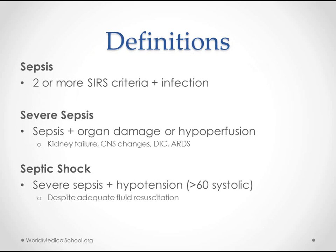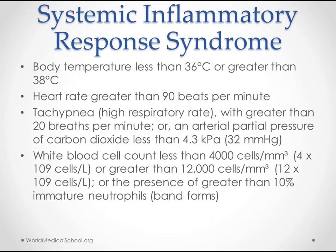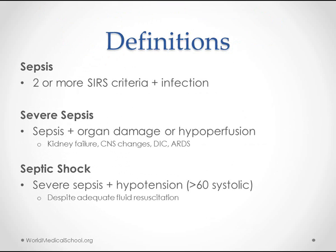The next definition is sepsis. Sepsis is basically SIRS caused by infection. In order to make this diagnosis, you need two or more of the SIRS criteria — body temperature, heart rate, respiratory rate, or white blood cell count — plus some source of infection. This can be as clear as an open wound or a line that's been in for a long time. You can almost assume that's sepsis because you have a foreign body in there, especially if you have a positive culture. That's good enough reason to start antibiotics, which we'll talk about shortly.